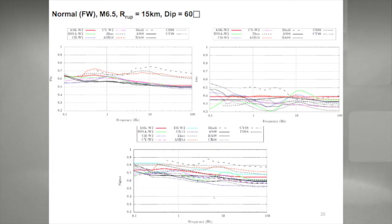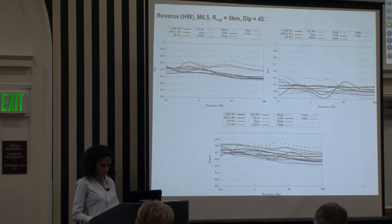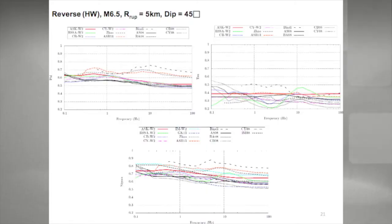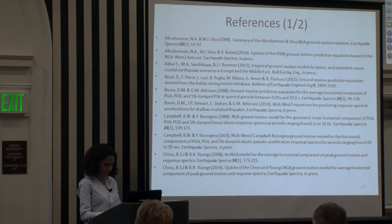Normal on the footwall, magnitude 6.5. Again, same kind of observations for phi, tau and the total signal. Reverse magnitude 6.5. This is very similar kind of standard deviations to the normal 6.5. And that's it.